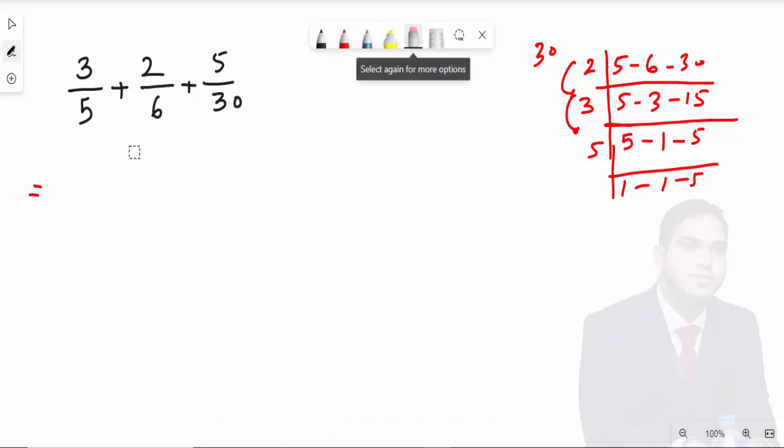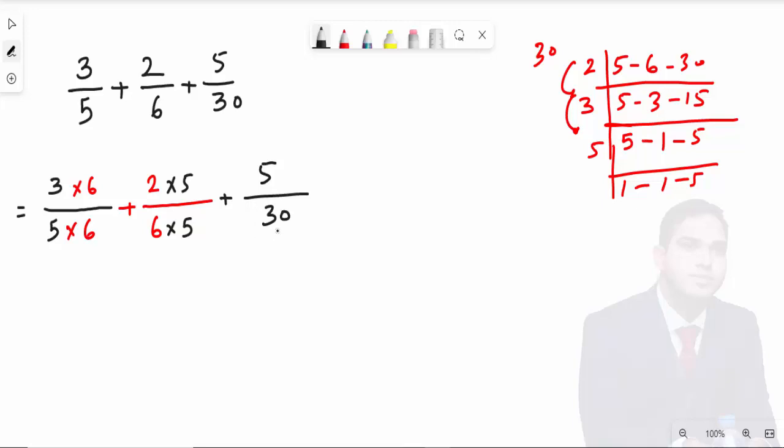What to do now? You need to make the denominator of each fraction equal to 30. So 3 over 5: multiply this 5 with any number that makes it 30 exactly—obviously it will be multiplied with 6. Now 2 over 6: multiply this 6 with any number that will make it 30—with 5. 5 over 30: there is no need of any multiplication with this fraction because 30 is already present.